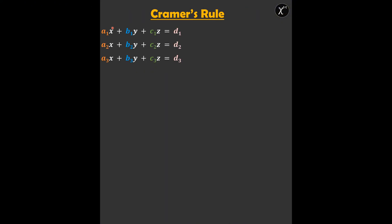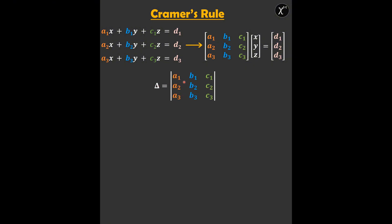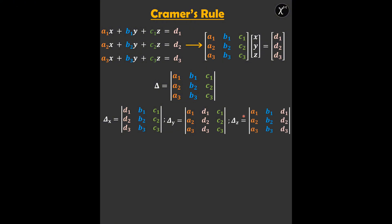Now let's go to our system of linear equations with three variables. Here is the general form, which can be represented in matrix form. To apply Cramer's Rule we need to define the following: delta, which is the determinant containing the coefficients of all the variables; delta x, which is similar to delta except the first column is replaced by the constants; and delta y, where the second column is replaced by the constants.